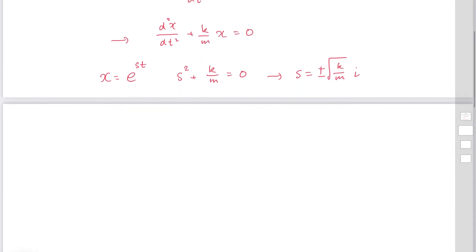This corresponds to alpha equals 0, beta equals square root k over m.